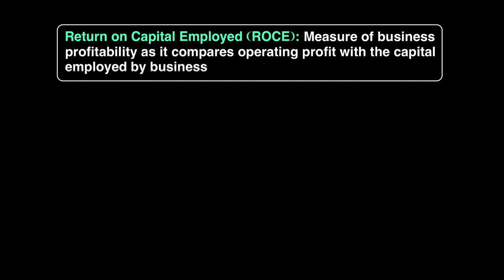Firstly, we talk about operating profit. When we look at our statement of profit or loss, it's revenues minus your direct and indirect costs — when all your costs are paid off you arrive at an amount known as your operating profit. They want to compare that with the capital employed. You don't see capital employed in the statement of profit or loss; you see it in the statement of financial position. So you're using both statements here to calculate how much a company has invested and how much they're making in return.